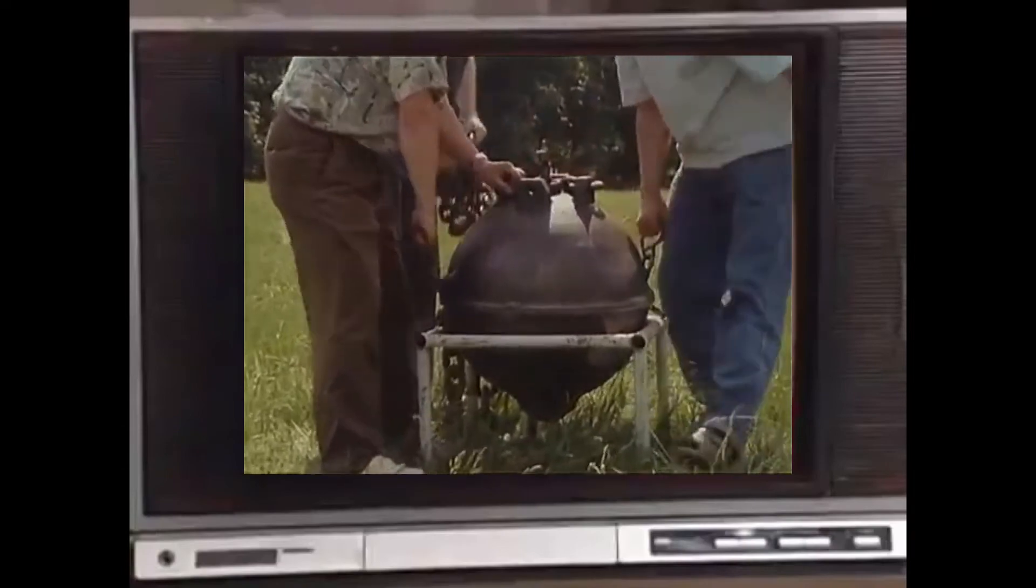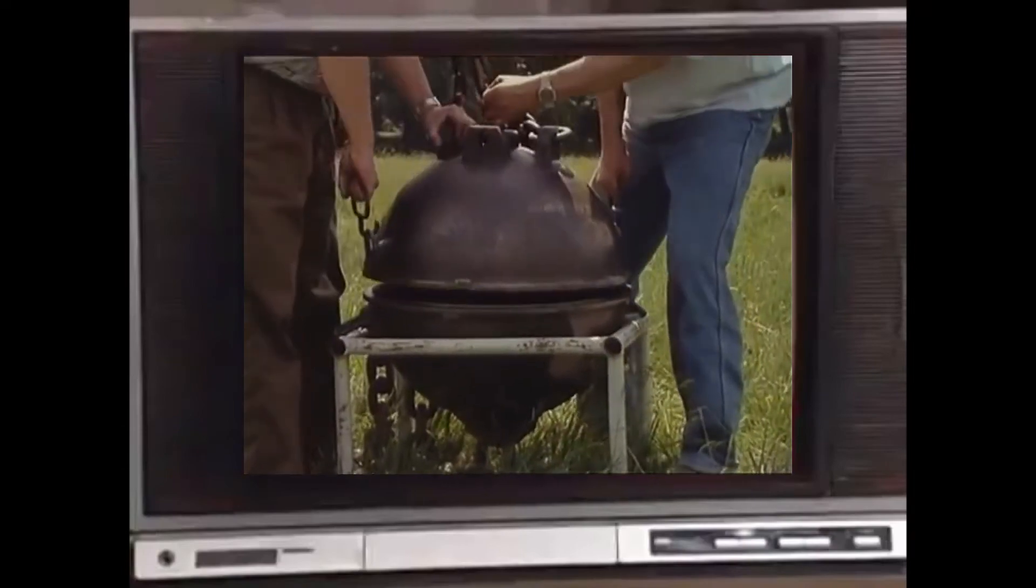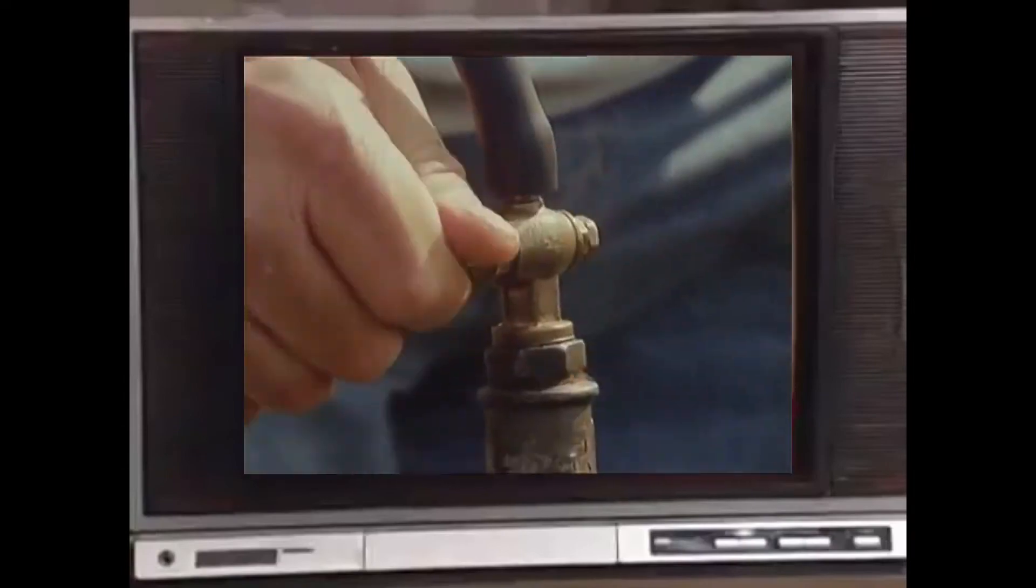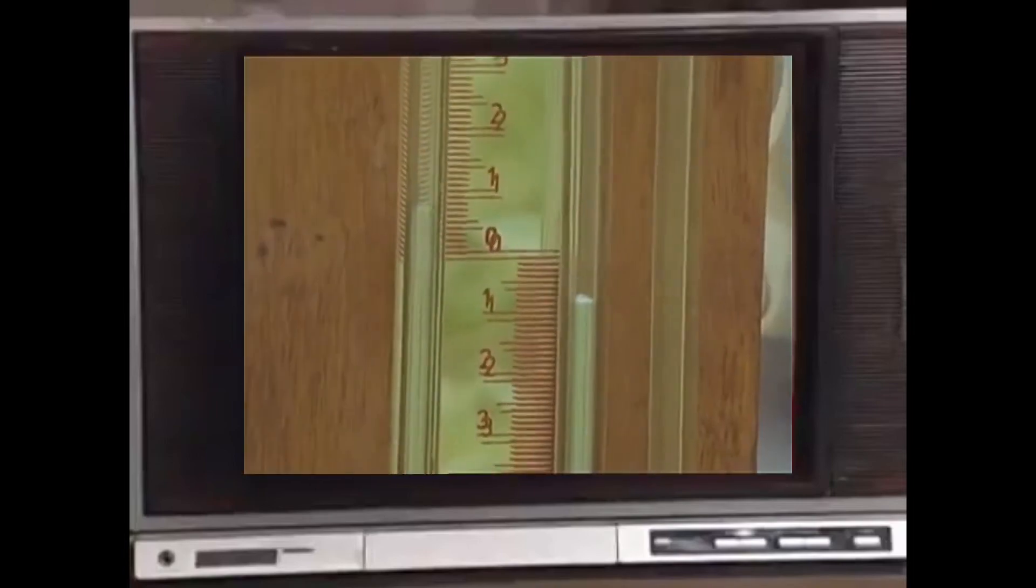In 1654, Otto von Guericke constructed an experiment in which he put two large metal bowls together and then pumped the air out. Then he tried to pull them apart.